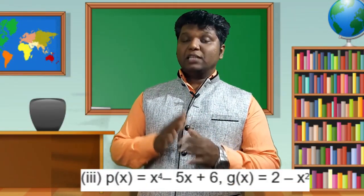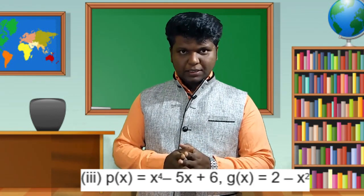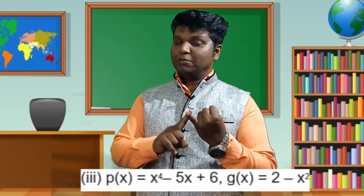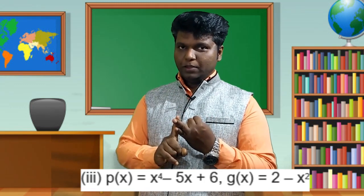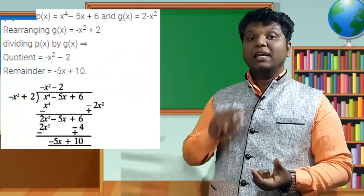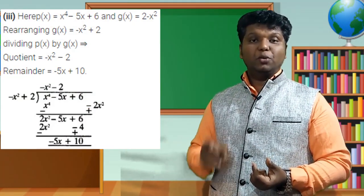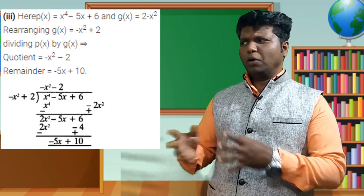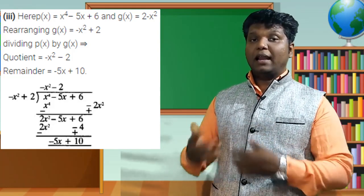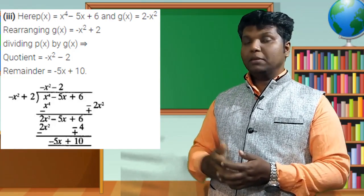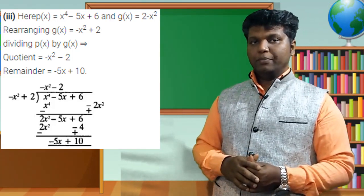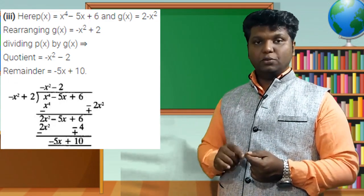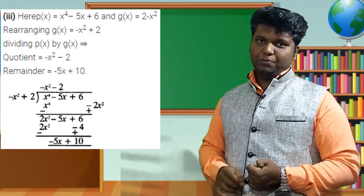Third question: p(x) = x⁴ − 5x + 6. Two terms are missing — x³ and x² — so write it as x⁴ + 0x³ + 0x² − 5x + 6. The divisor is 2 − x², which is not in order and has a missing x term; rewrite as −x² + 0x + 2.